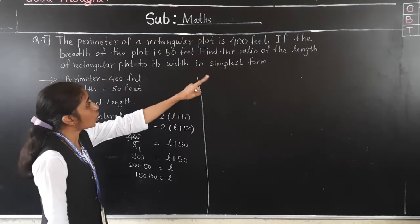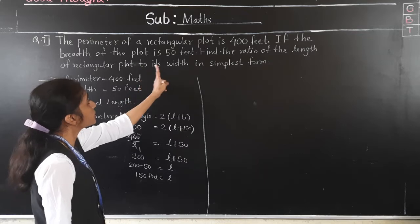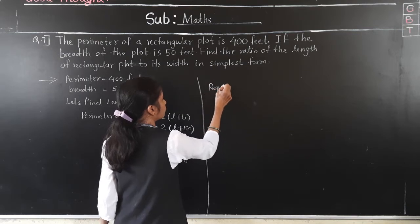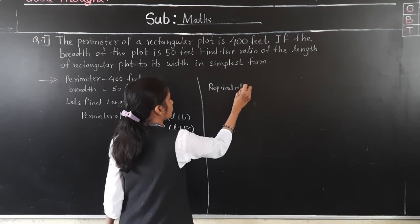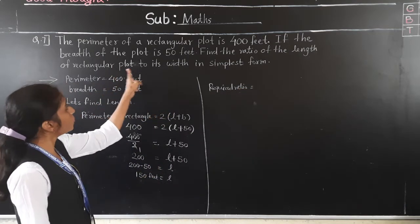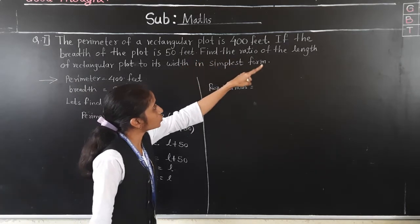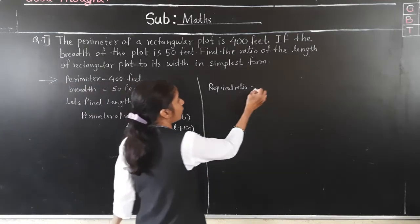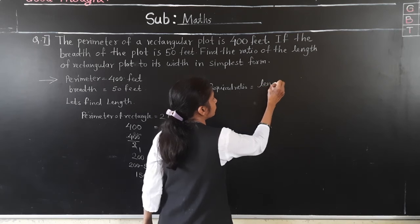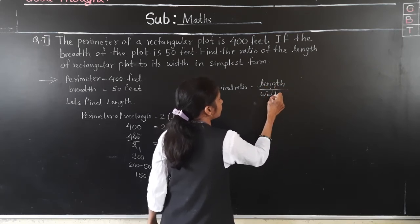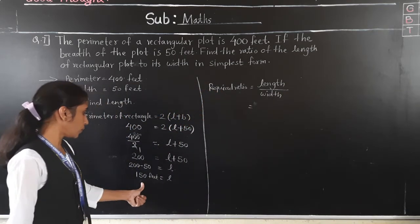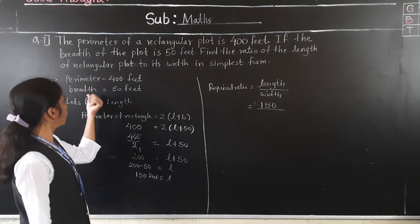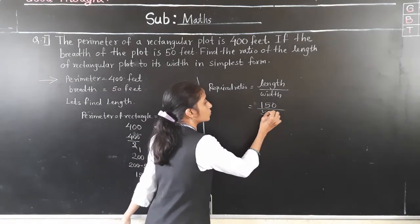Now, what is asked? Find the ratio of the length of the rectangular plot to its width. Length is 150 feet, and width (breadth) is 50 feet. So required ratio is 150 to 50.